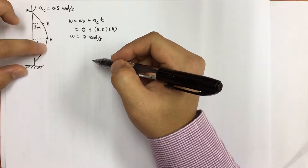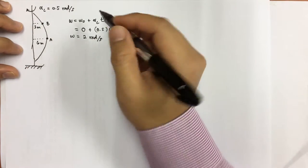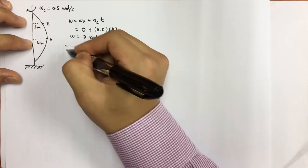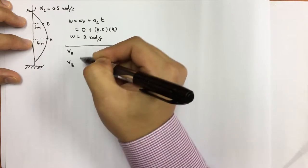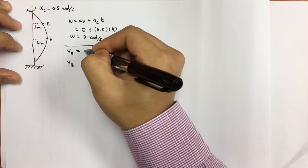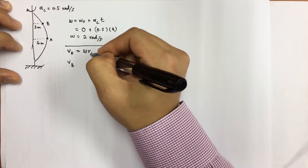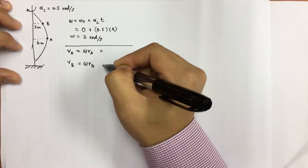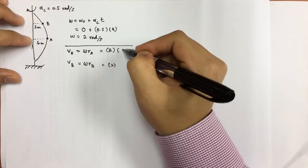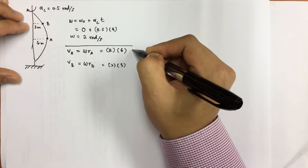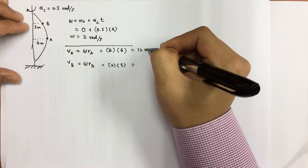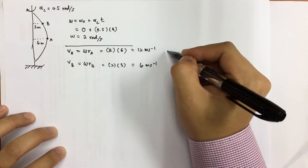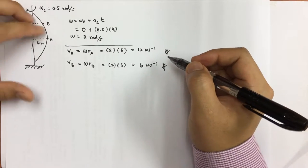Now we need to examine these two points. When we calculate, we do so with respect to the radius. The velocity of A and the velocity of B are two different things. For velocity of A, we use angular velocity times R_A. Similarly, velocity of B equals angular velocity times R_B. So with omega equals 2, R_A equals 6, and R_B equals 3, we get velocity A equals 12 meters per second and velocity B equals 6 meters per second.